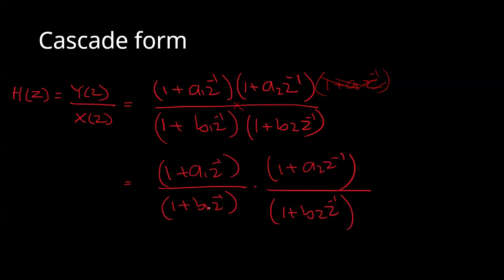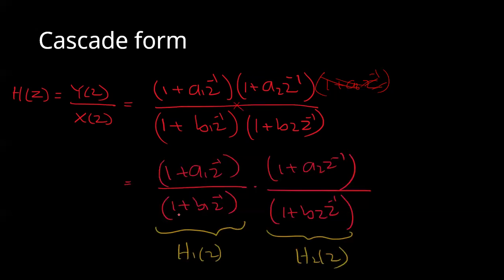And then 1 plus a2 z-inverse divided by 1 plus b2 z-inverse. So this is h1 of z, and this is h2 of z. That's why the transfer function is split — h1 of z times h2 of z equals H of z. So they are separate subsystems.